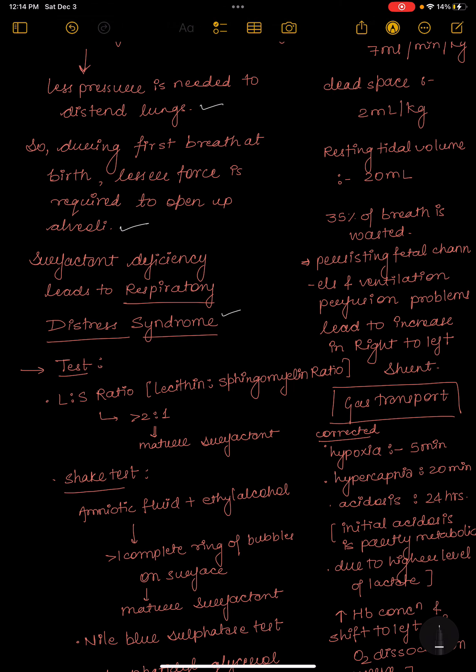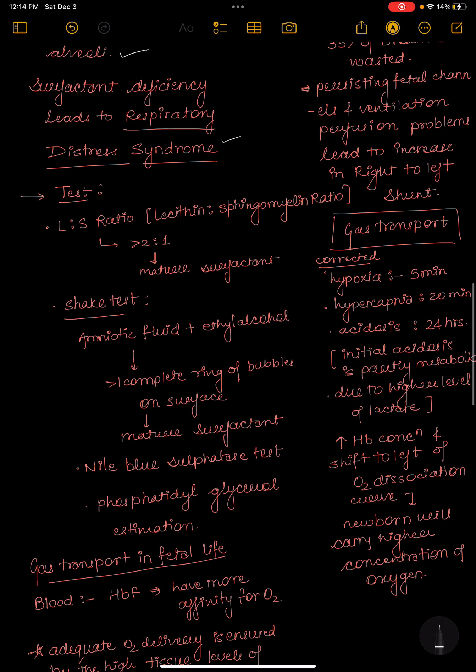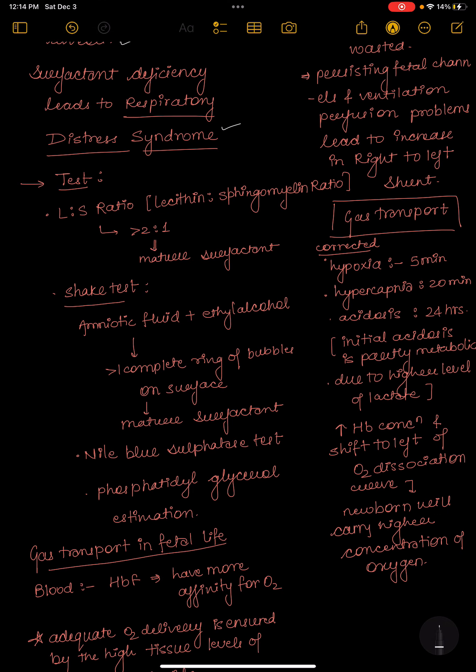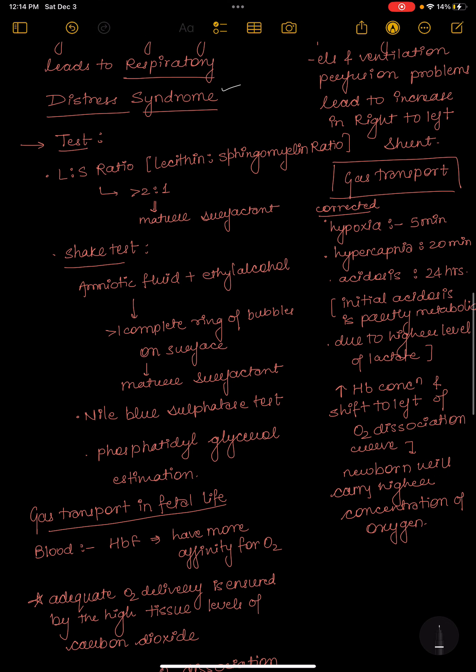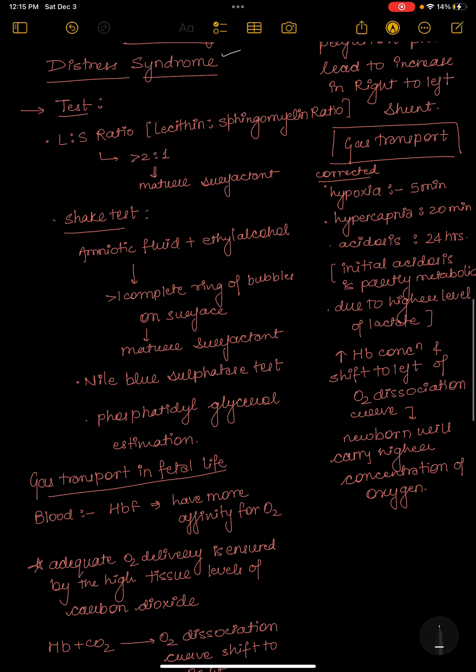Tests for surfactant measurement: lecithin and sphingomyelin ratio - if the ratio is more than 2:1, this represents that the lungs are matured and there is presence of matured surfactant.